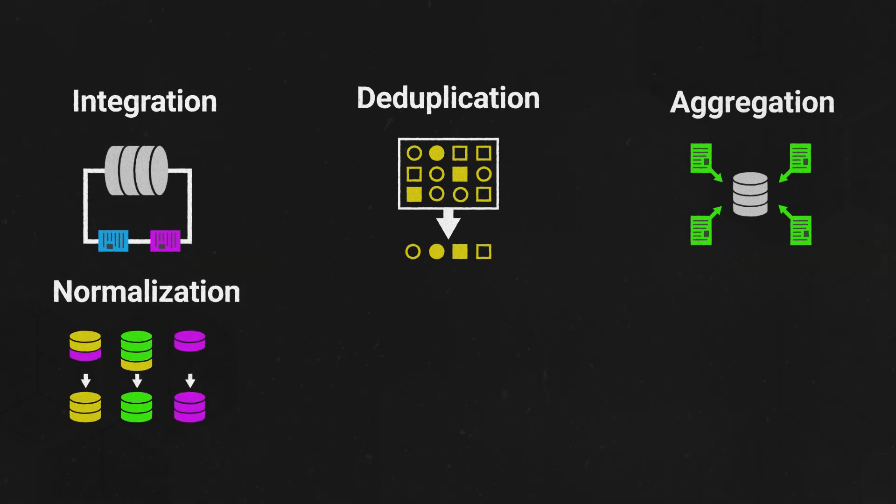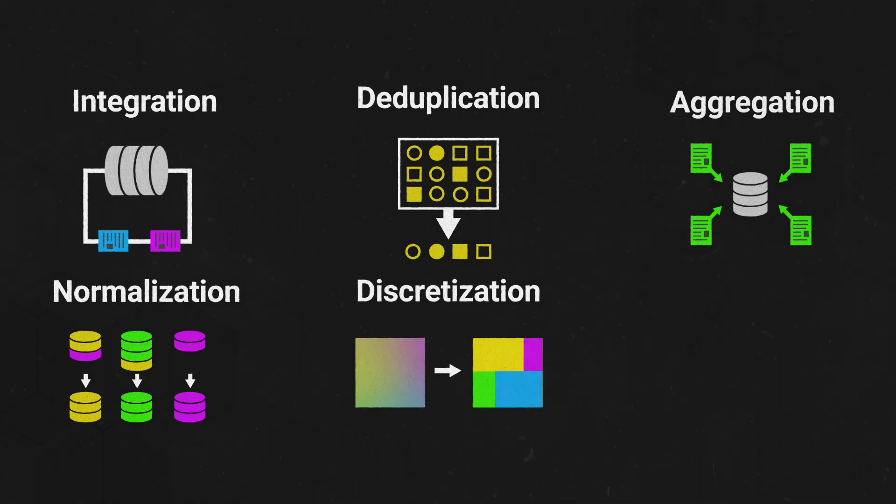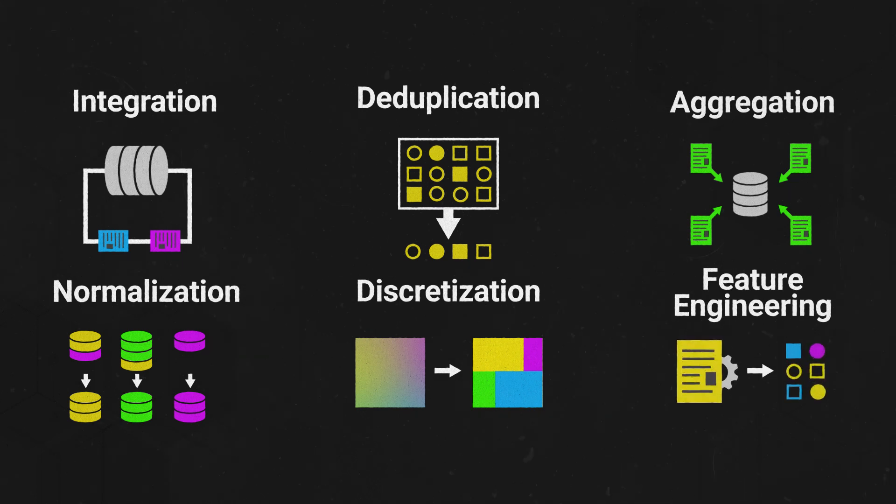Normalization ensures that data elements use the same scalar format. Discretization simplifies larger datasets by breaking it into finer or more detailed elements. And feature engineering creates new data elements from existing ones. This technique enhances the data used to train machine learning models.